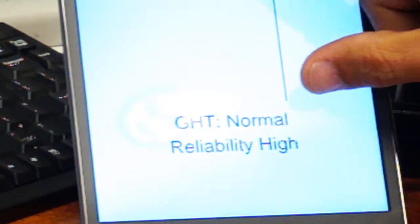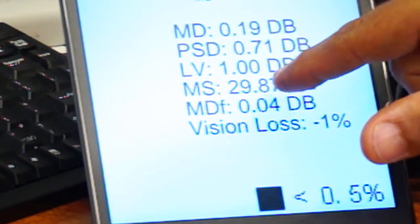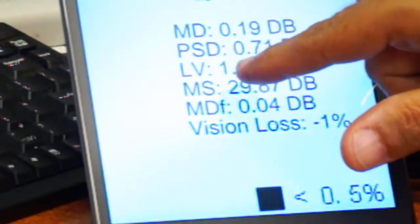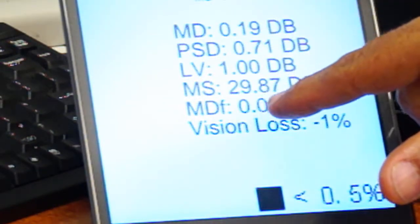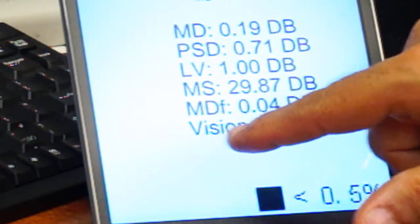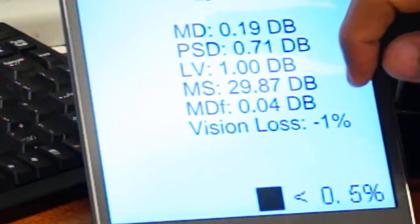The reliability was high and the parameters that are given are MD, which is mean deviation. PSD is pattern standard deviation. LV is loss variance. Loss variance means sensitivity, mean difference, and vision loss, which was minus 0.1%, which is slightly better than normal.